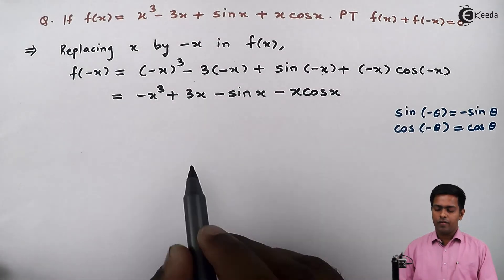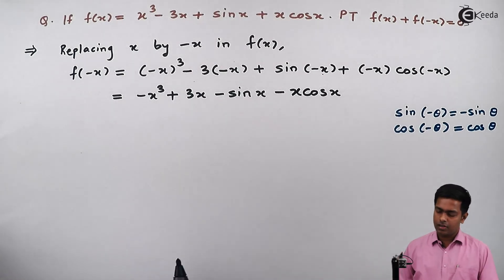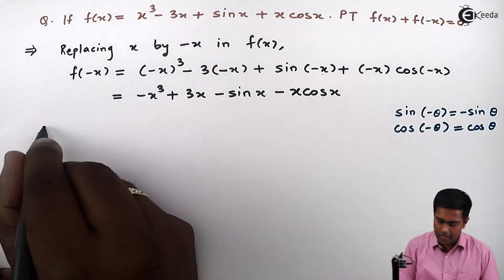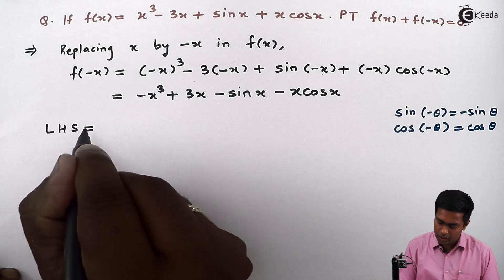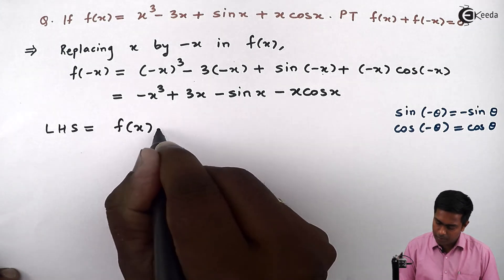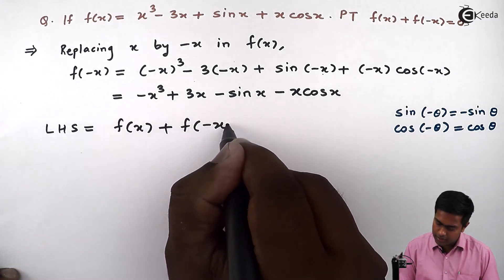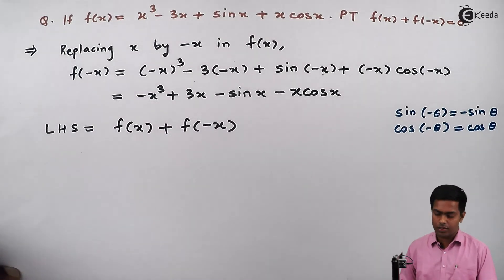So here we got the value of f(-x). Now to prove the result I will start with left hand side. So left hand side is f(x) plus f(-x). So let's substitute the values.